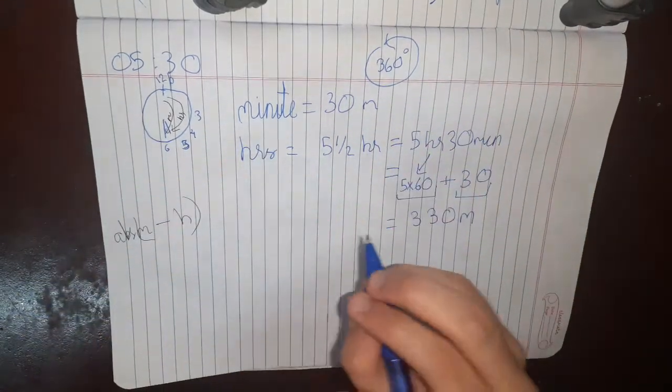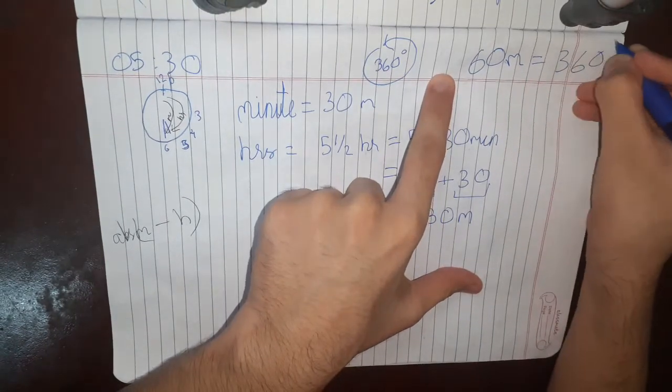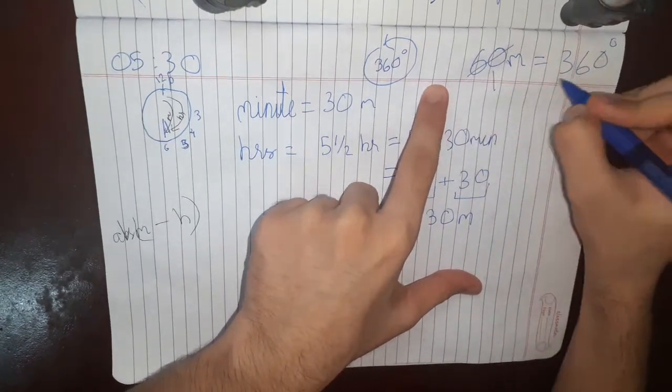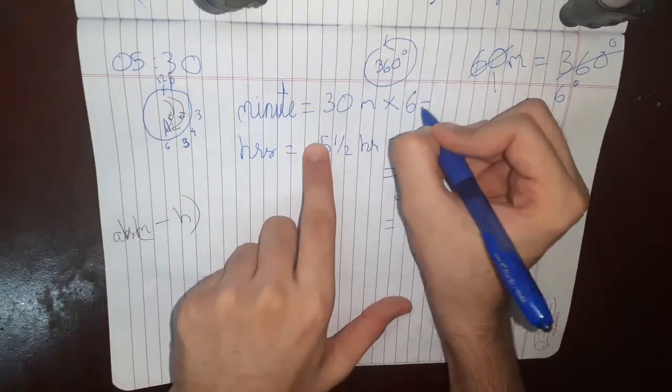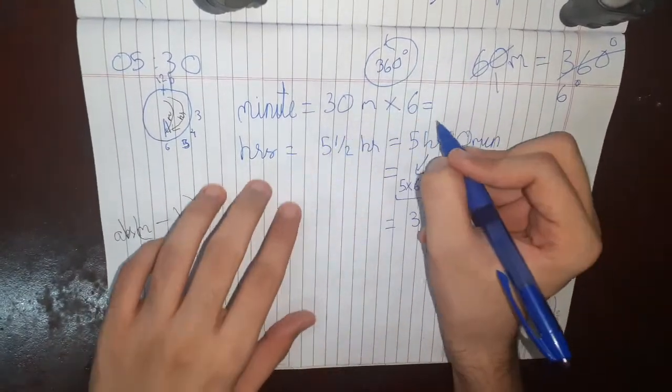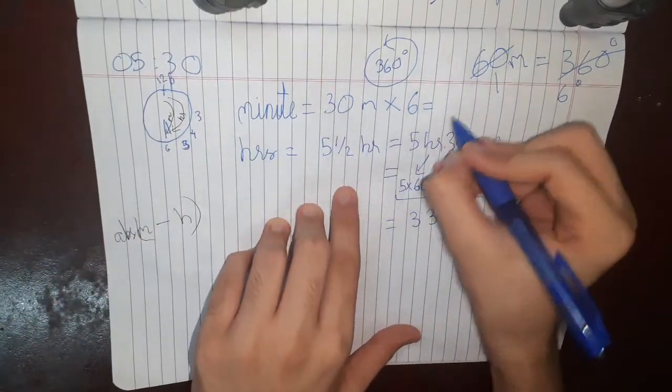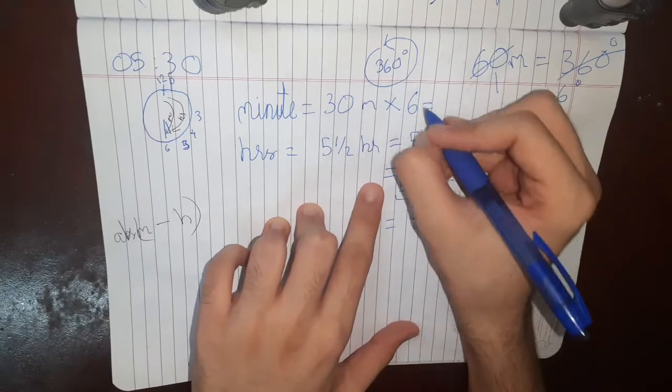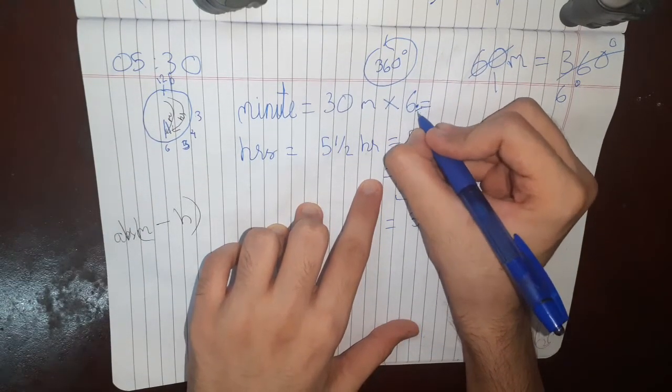So basically what is being said is that 60 minutes is equal to 360 degrees. One minute is 6 degrees. So I'll simply multiply this by 6 to get my angle over here. Just multiply this by 6 because we want it in degrees. The unit would be degree per minute.